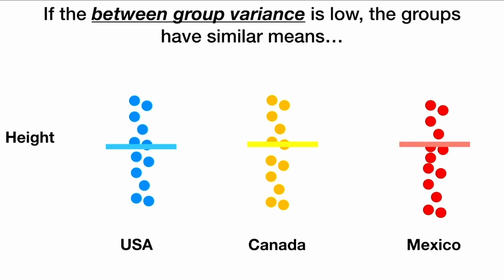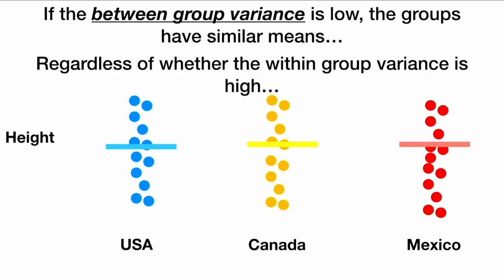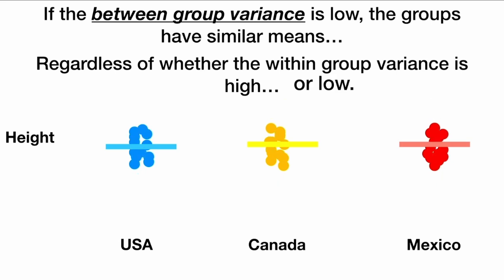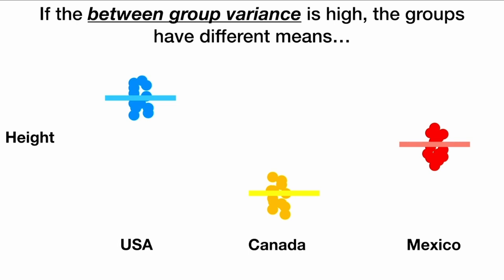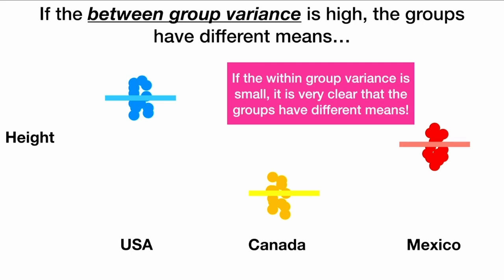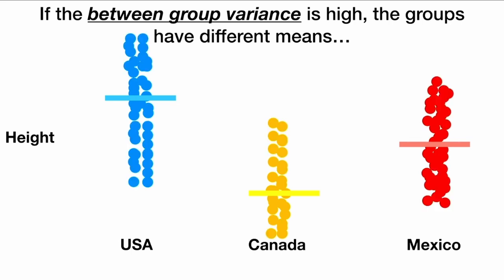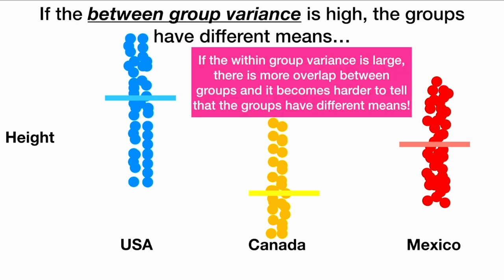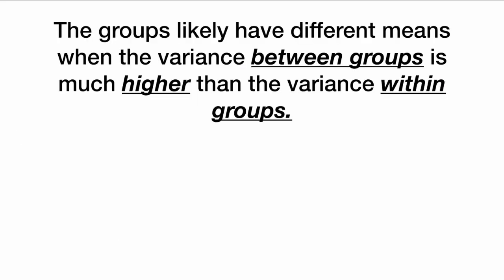If the between-group variance is low, the groups have similar means, and we do not want to reject the null hypothesis. If the between-group variance is high, the groups have different means, and we would want to reject the null. If the within-group variance is small, we can see that the groups are very clearly different, with almost no overlap in heights. However, if both between-group and within-group variance are high, there is more overlap between the groups and it becomes harder to tell the groups have different means. The groups likely have different means when the variance between groups is much higher than the variance within groups.